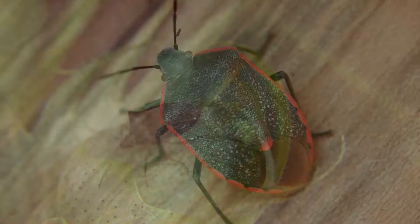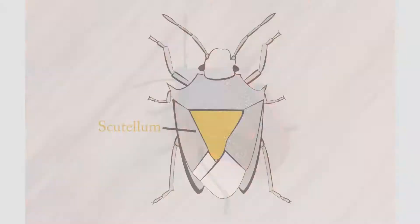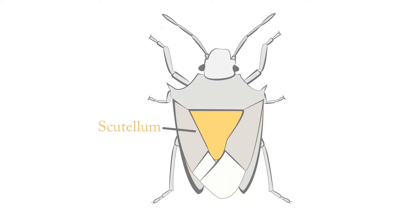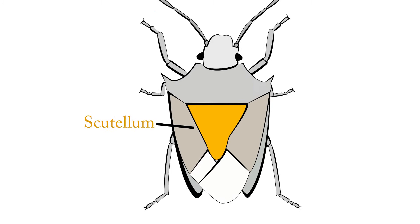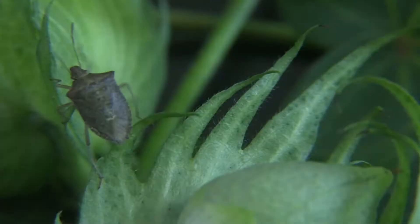All stink bugs can be identified by the scutellum on the back of their body, which looks like a large triangular shaped shield. Regardless of the species or size, they all cause the same types of damage and are handled the same.